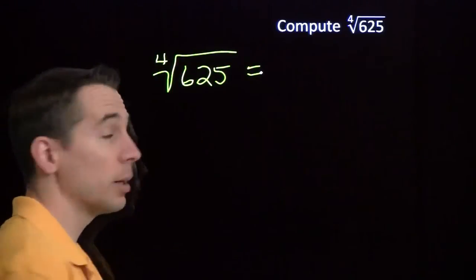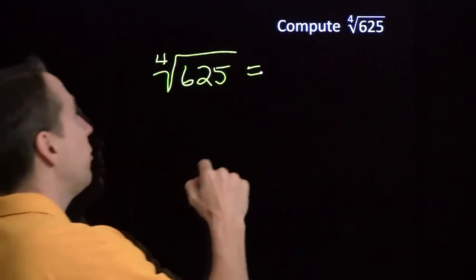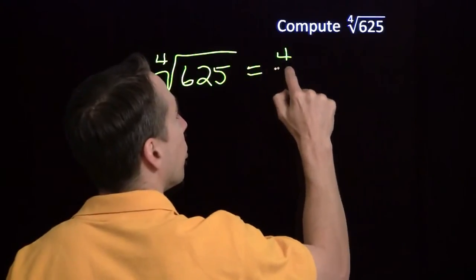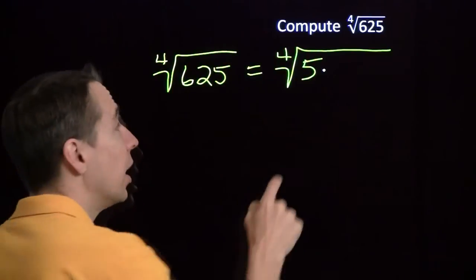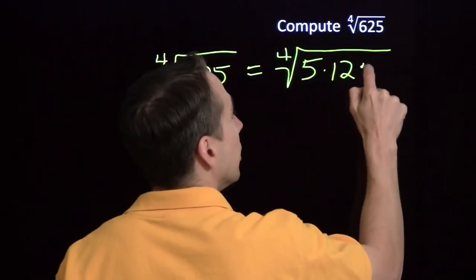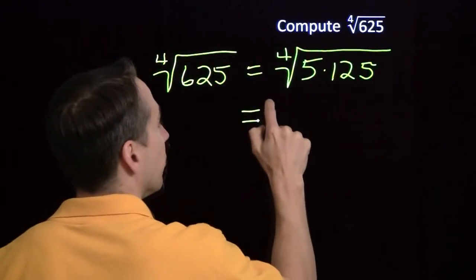You might recognize that as 25 squared, but if you don't, you can still pull out a factor of 5. We can look at this as the fourth root of 5 times—divide 5 into 625, you'll get 125.